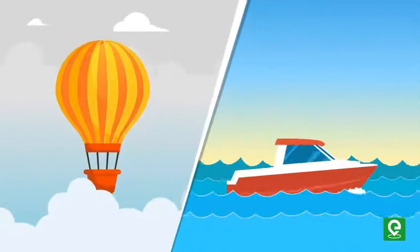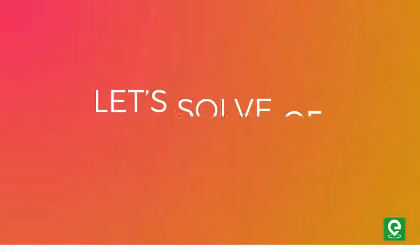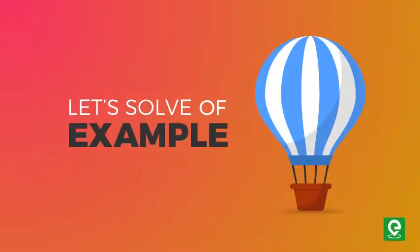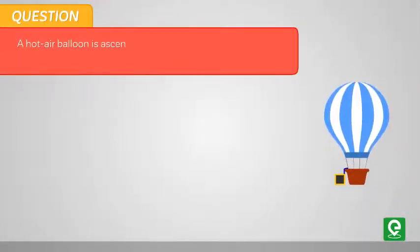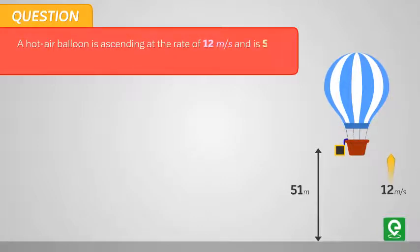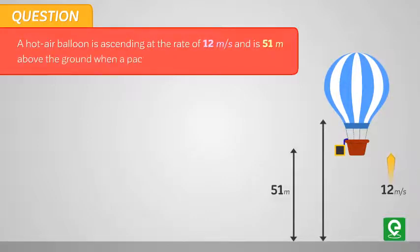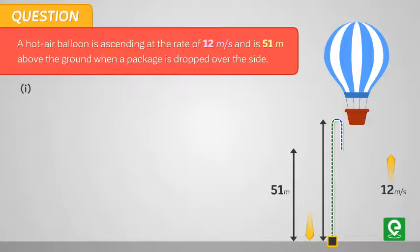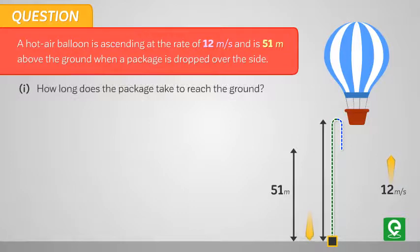Let's solve an example of hot air balloon questions. A hot air balloon is ascending at the rate of 12 meters per second and is 51 meters above the ground when a package is dropped over the side. First part: how long does the package take to reach the ground?